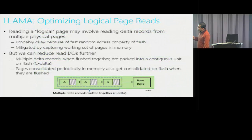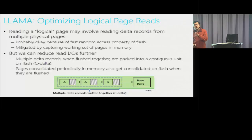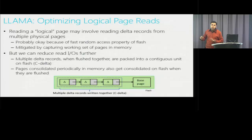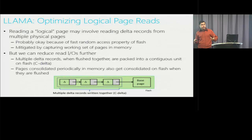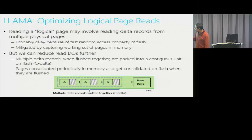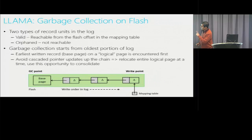A fundamental issue with log structuring is page fragmentation — page fragments spread across different parts of the log. The penalty is reduced compared to hard disk because random reads on flash are far faster. BW-tree is more tolerant of fragmentation by exploiting the excellent random read speed of flash SSDs. As an additional optimization, when flushing multiple delta records from a page, they can be grouped into a contiguous C-delta, reducing the number of IOs needed to read a page back from flash.